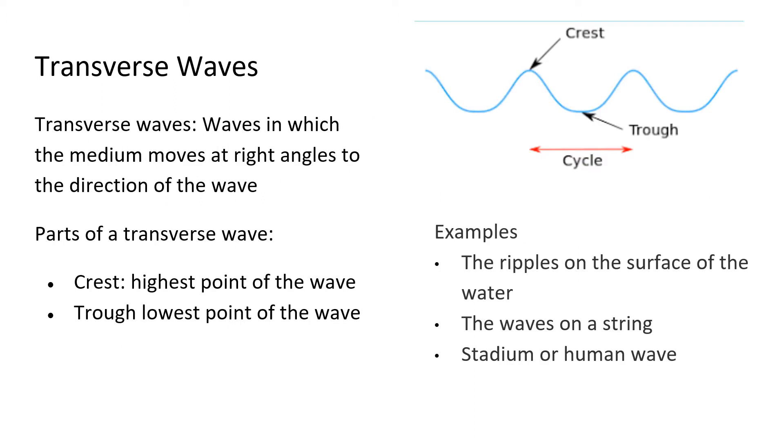A transverse wave is a wave in which the media moves at right angles to the direction of the wave. Parts of a transverse wave are the crest, the highest points, and the troughs, which are the lowest points.